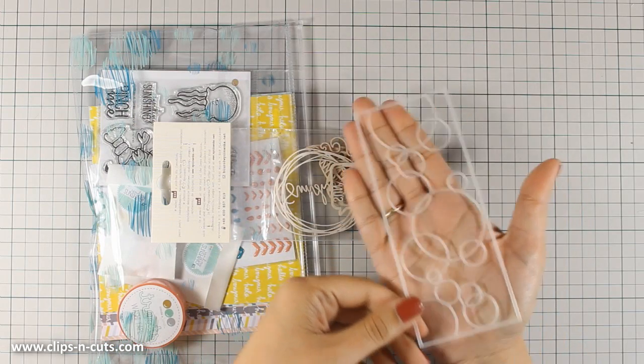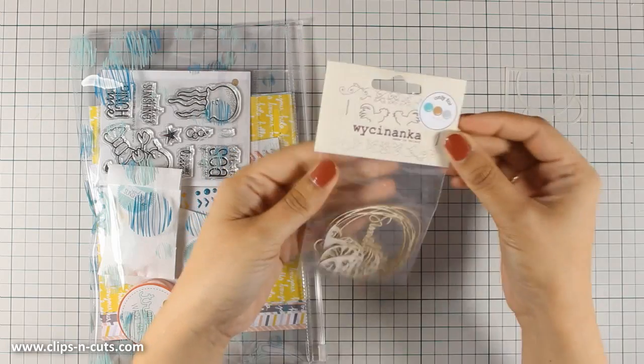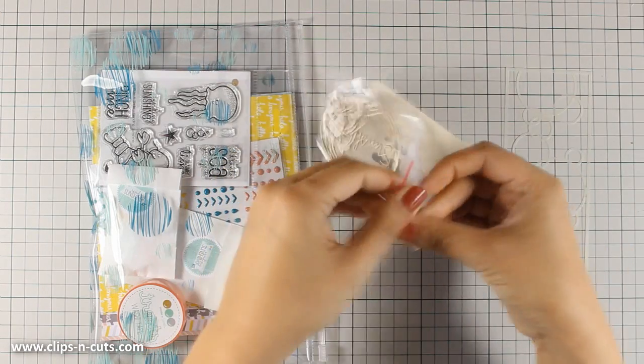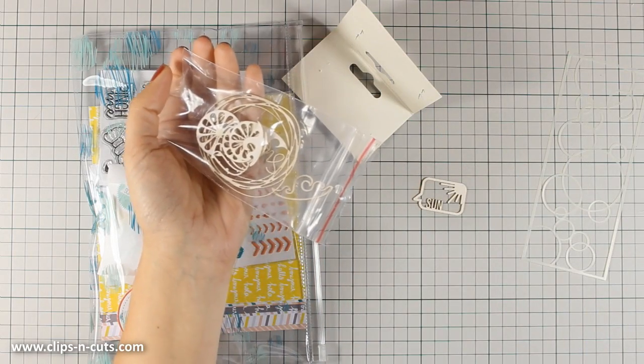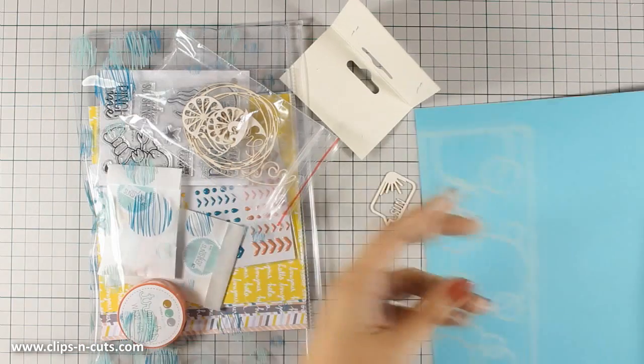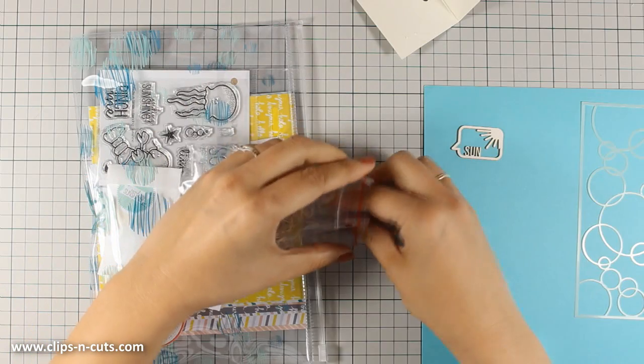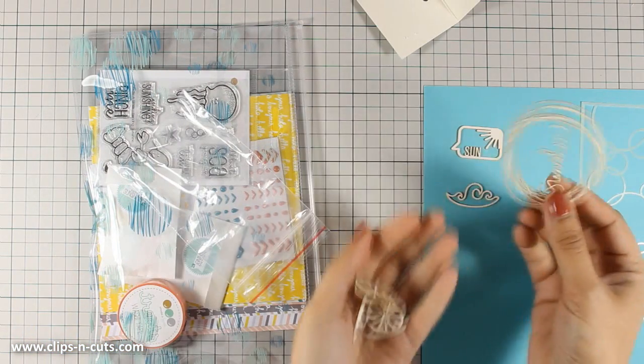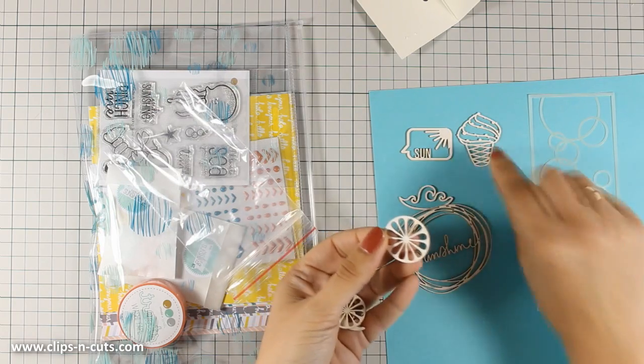This is a stencil with bubbles that perfectly matches the theme of the card kit. And there is also a package full of wood veneer cutouts. I'm going to grab a cardstock so I can put all those wood veneers on top so that you can see the designs better. There are clouds, there are lemon slices or orange slices, there's this cool sunshine cutout as well as an ice cream.